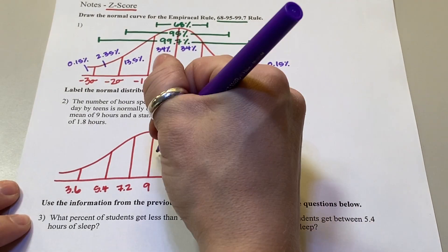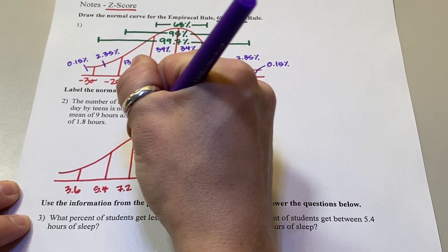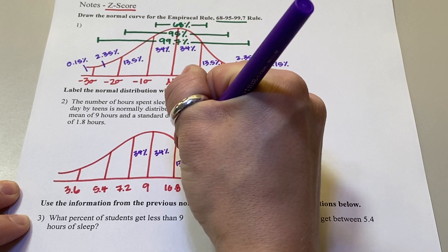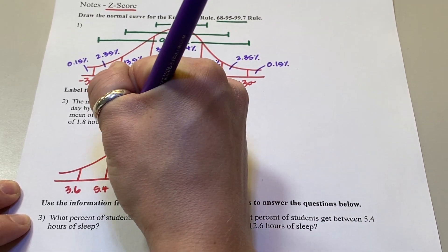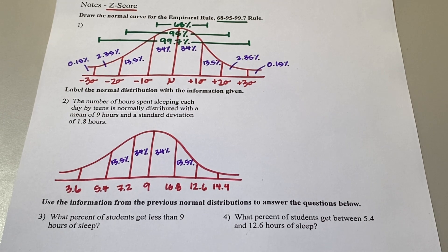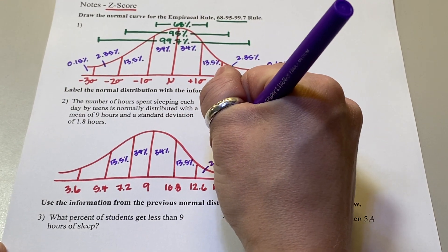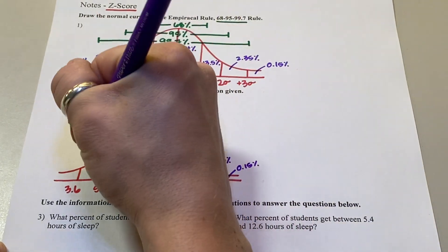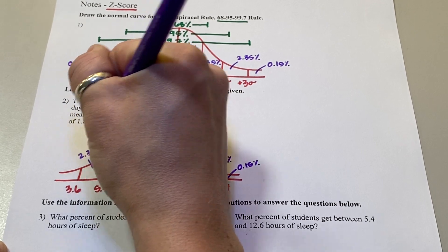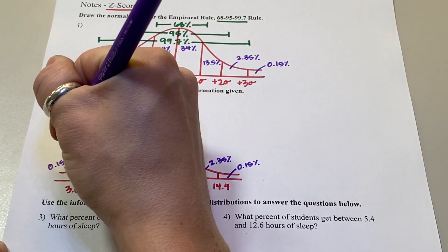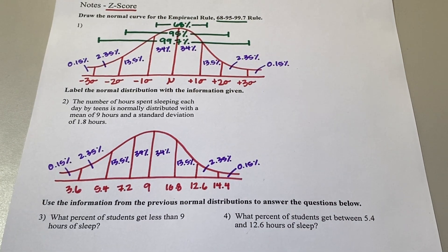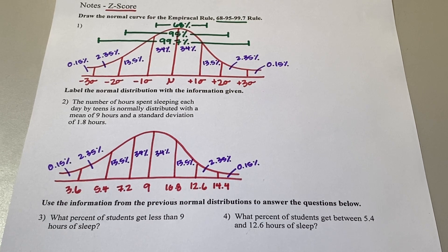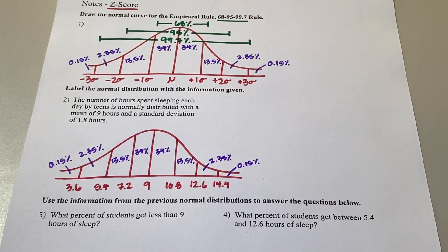Now fill in the percentages: 34%, 34%, then 13.5% and 13.5%. The next sections are 2.35% and 0.15%, same thing on both sides. So it's the same normal distribution with the same percentages — we're just giving it context with hours of sleep. Now let's answer the questions.